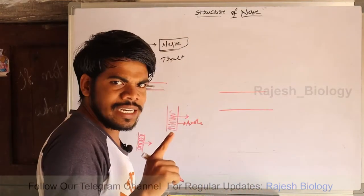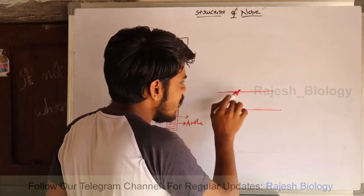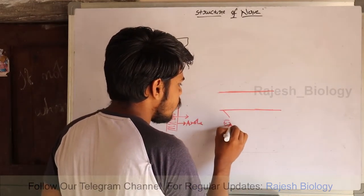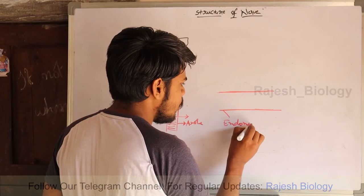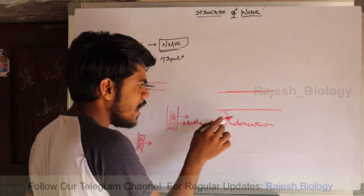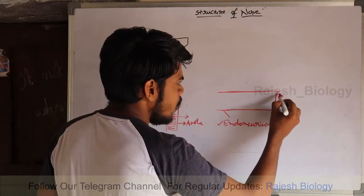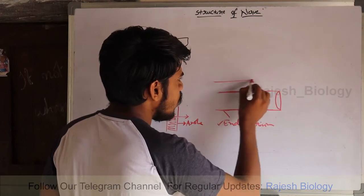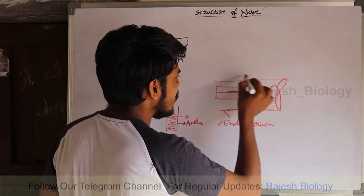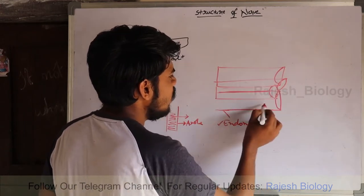A single axon is also known as a nerve fiber, and that nerve fiber is lined by endoneurium. So the covering of a single axon or nerve fiber is known as endoneurium. A number of axons together form a fascicle.